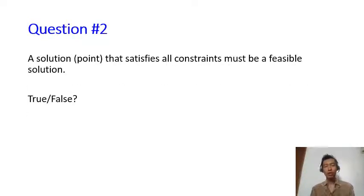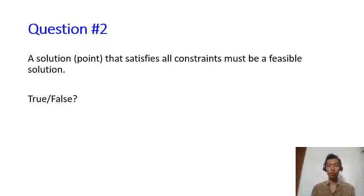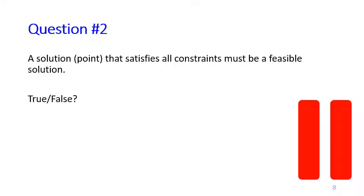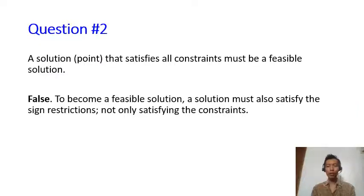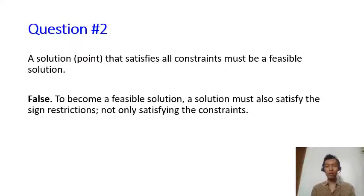Second question: a solution or a point that satisfies all constraints must be a feasible solution — true or false? The answer is false. To become a feasible solution, a solution must also satisfy the sign restrictions. So not only the constraints, but it must also satisfy the sign restrictions for us to call it a feasible solution.